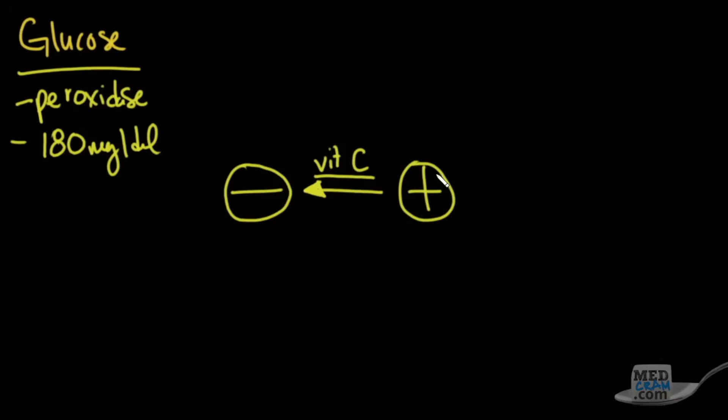Just so you're aware, in terms of positive, you could have a trace, you can have a 1+, a 2+, a 3+, and a 4+. And these generally are associated with approximately 100 milligrams per deciliter, 250, 500, 1000, and up to 2,000 milligrams per deciliter in the urine. So you could get quite a bit of spillage of glucose in the urine.